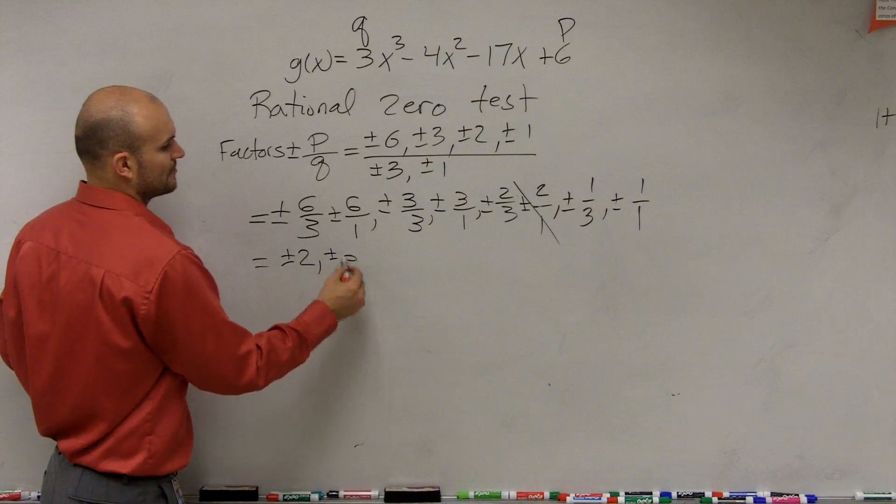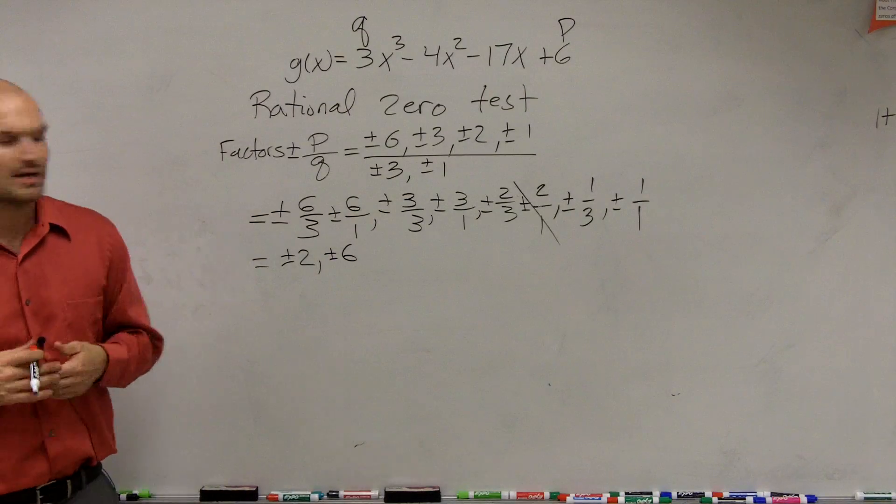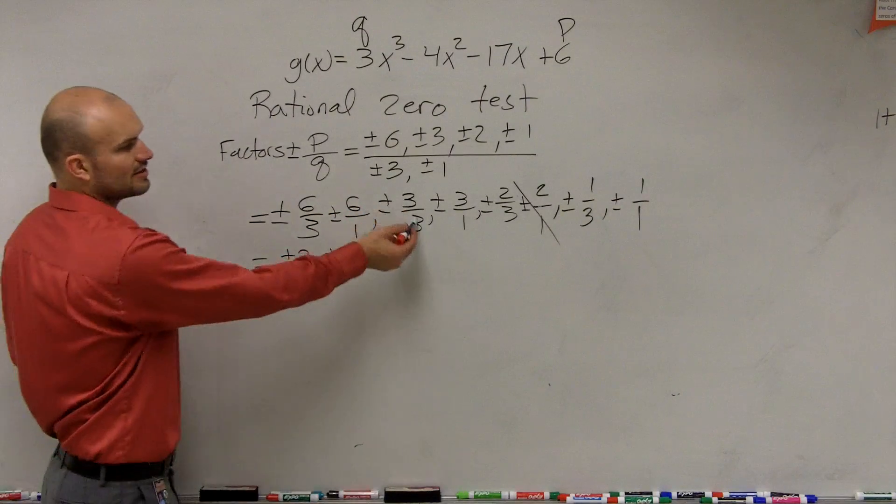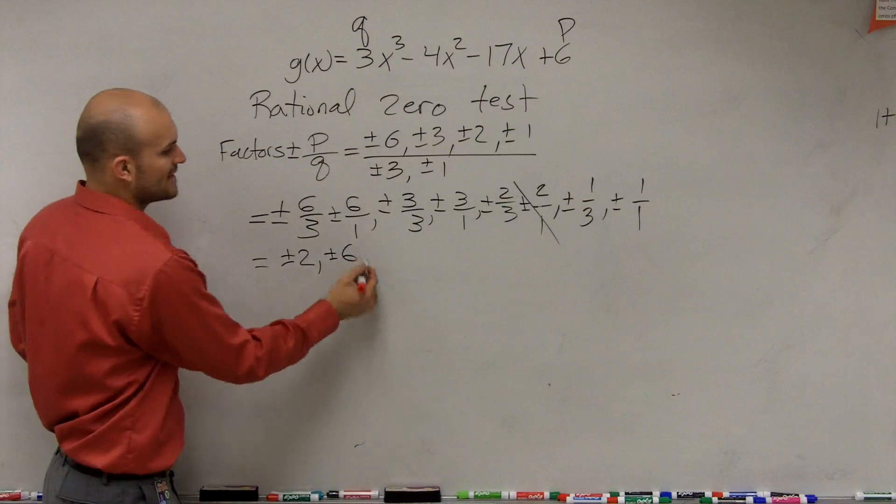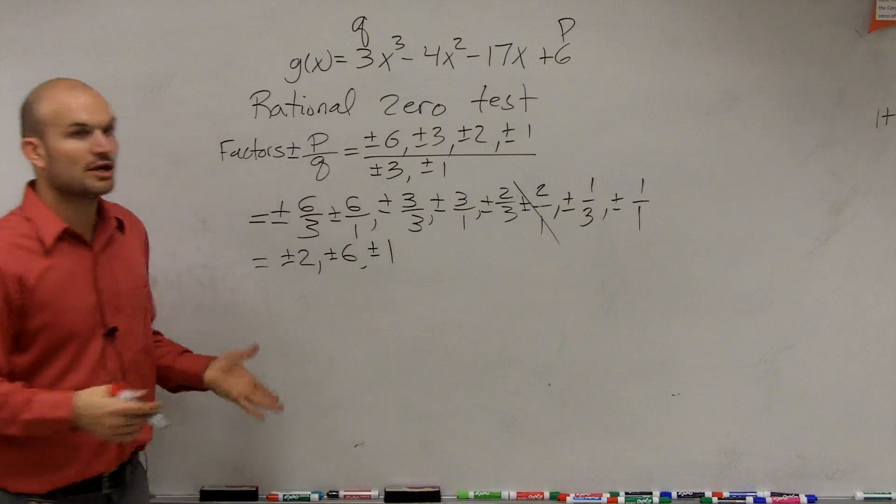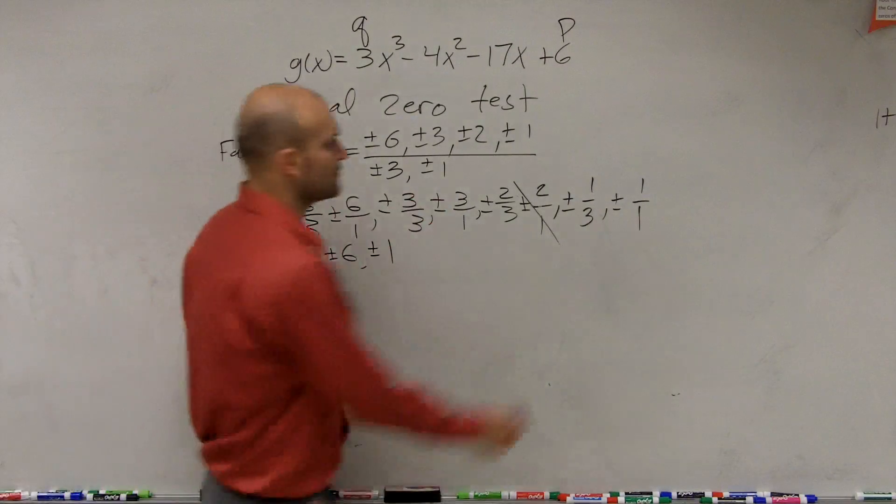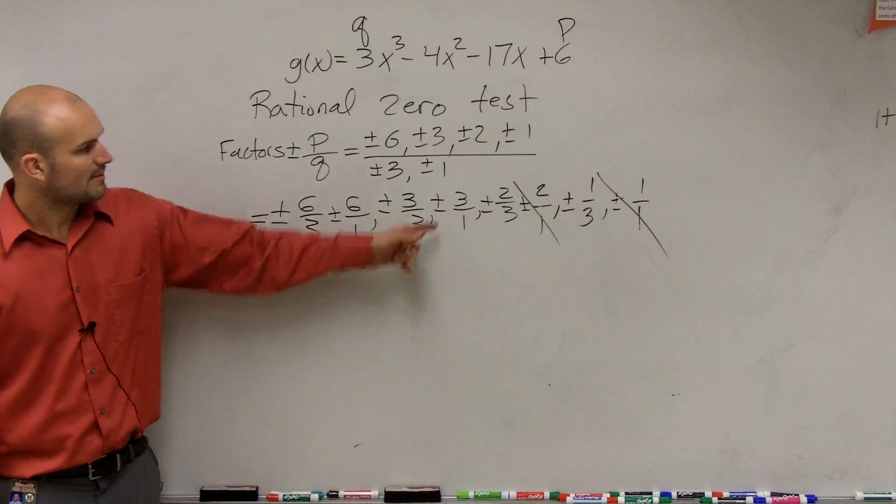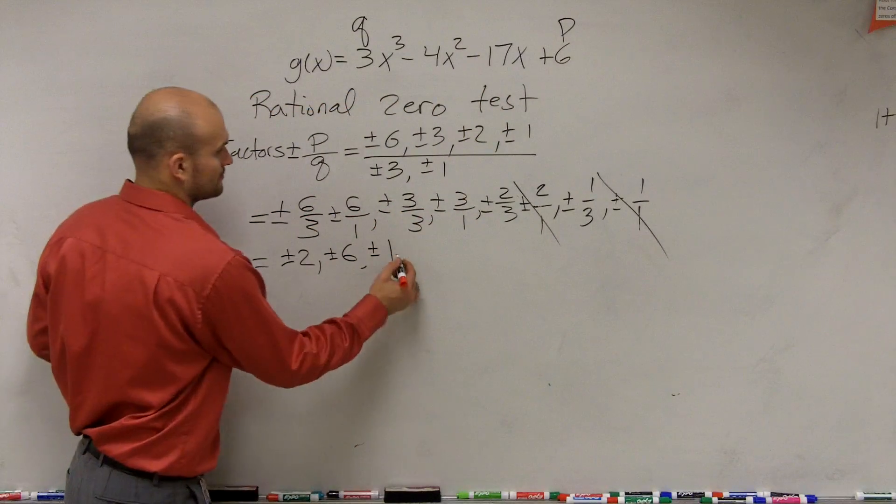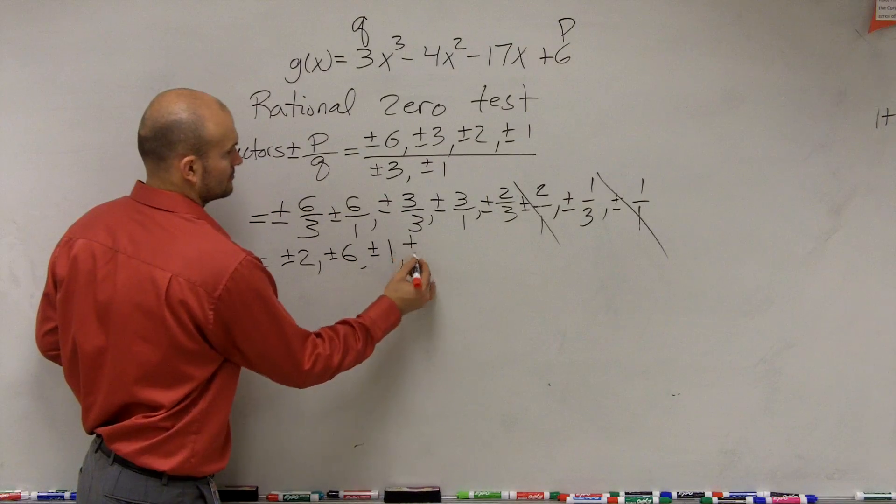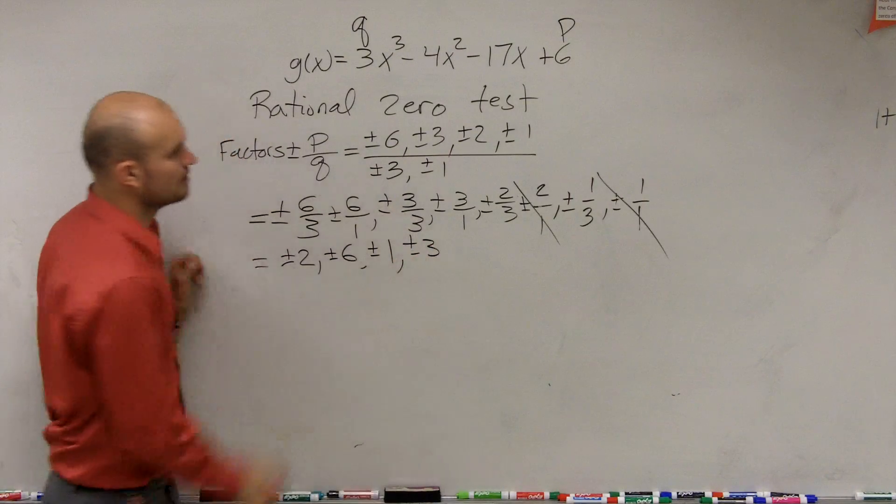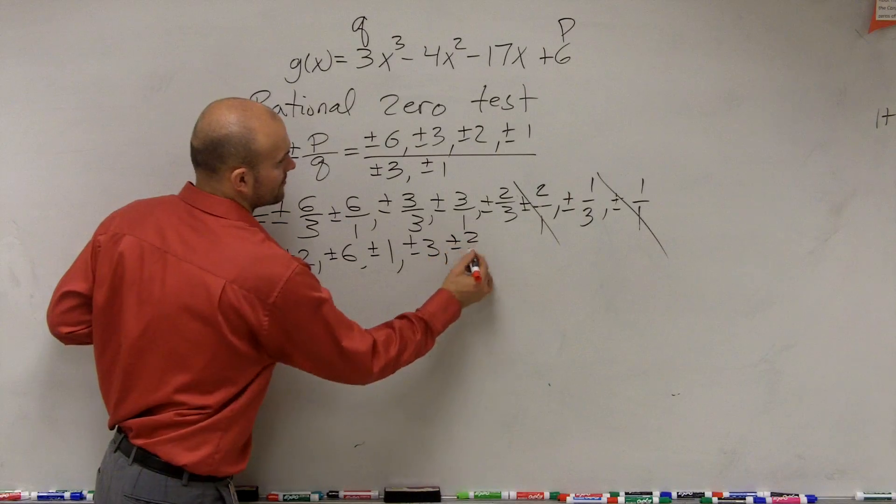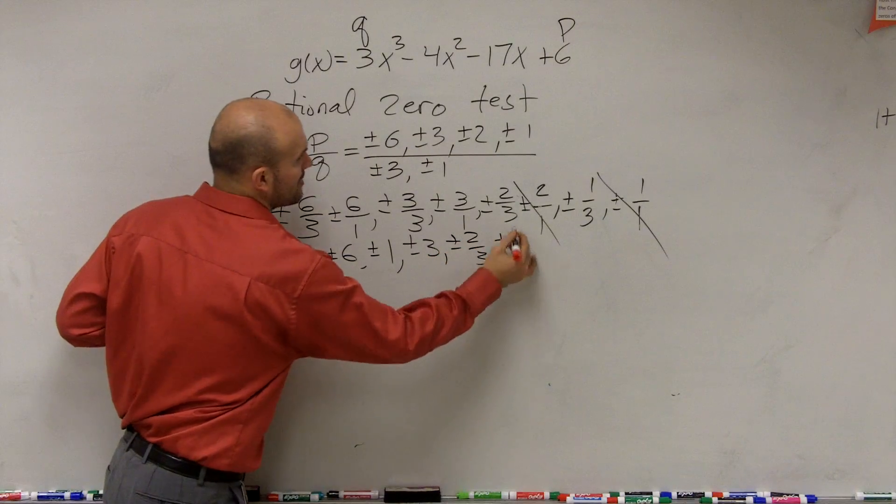Plus or minus 6. Good, we got that one. Is there any other number that represents 6? No. Here, this one, plus or minus 3 divided by 3. That's plus or minus 1. Do we have another answer that's repeated? Yeah, we have 1 over 1 here. So we can just cancel that out. Then we have plus or minus 3. And we have plus or minus 2 thirds. And plus or minus 1 third.